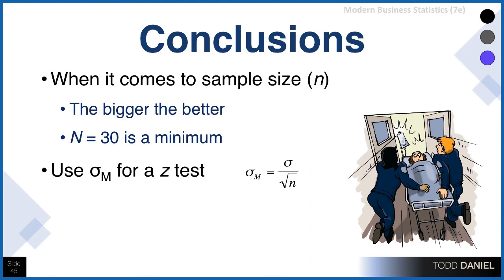Let's see what conclusions we can draw from what we've learned thus far. When it comes to sample size, bigger is better. An n of 30 for your sample is the recommended minimum. And we will use the standard error of the mean for a z-test.